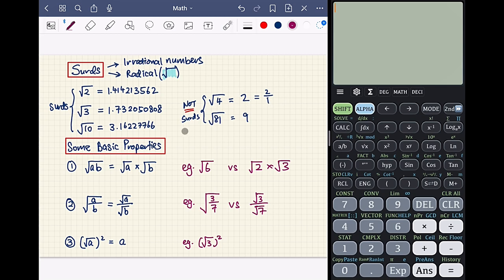Some basic properties are, for example, property number 1. If we have square root of a multiplied with b, it can be broken up into square root of a multiplied with square root of b.